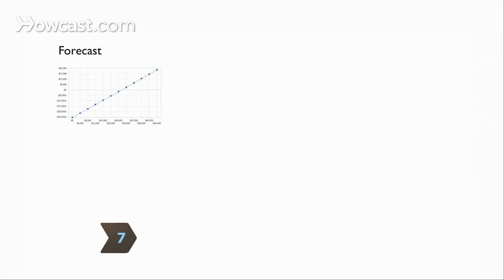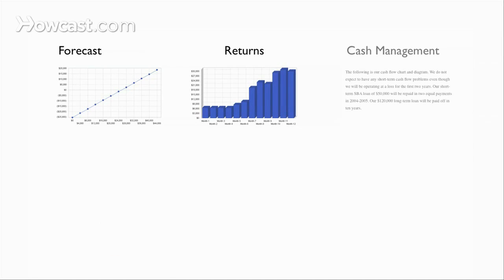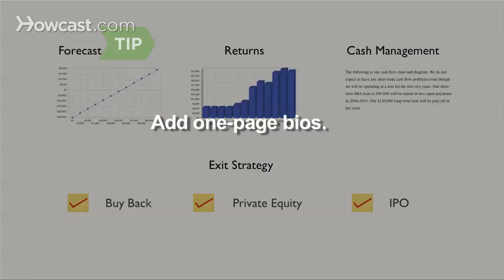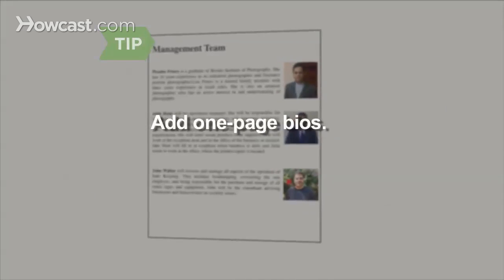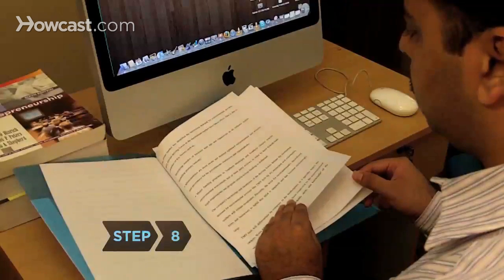Step 7. Forecast financial scenarios for procurement, investment returns, and cash management. Provide an exit strategy that relies on historical and financial data. Add one-page bios with summaries of accomplishments of the founders, central players, and key management.